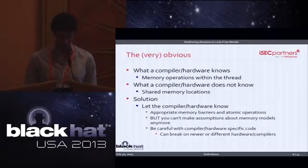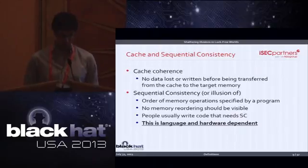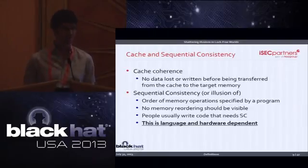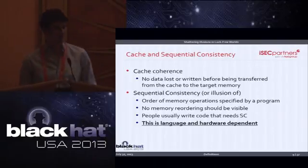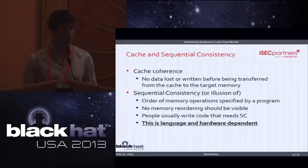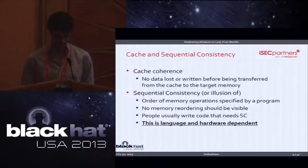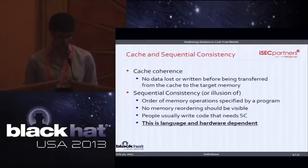Now you have to use the appropriate barriers and understand memory models of the compiler and the hardware. Two main concepts to understand are cache coherence and sequential consistency. Cache coherence means that writes made by a processor are eventually seen by other processors without being lost or overwritten. Sequential consistency is really important — it is language and hardware dependent, and basically means that in a perfect sequentially consistent world the program you write is executed as you wrote it, with no reordering. In current hardware and languages, sequential consistency is kind of an illusion, even though you can force it to some extent, but it would be very slow.